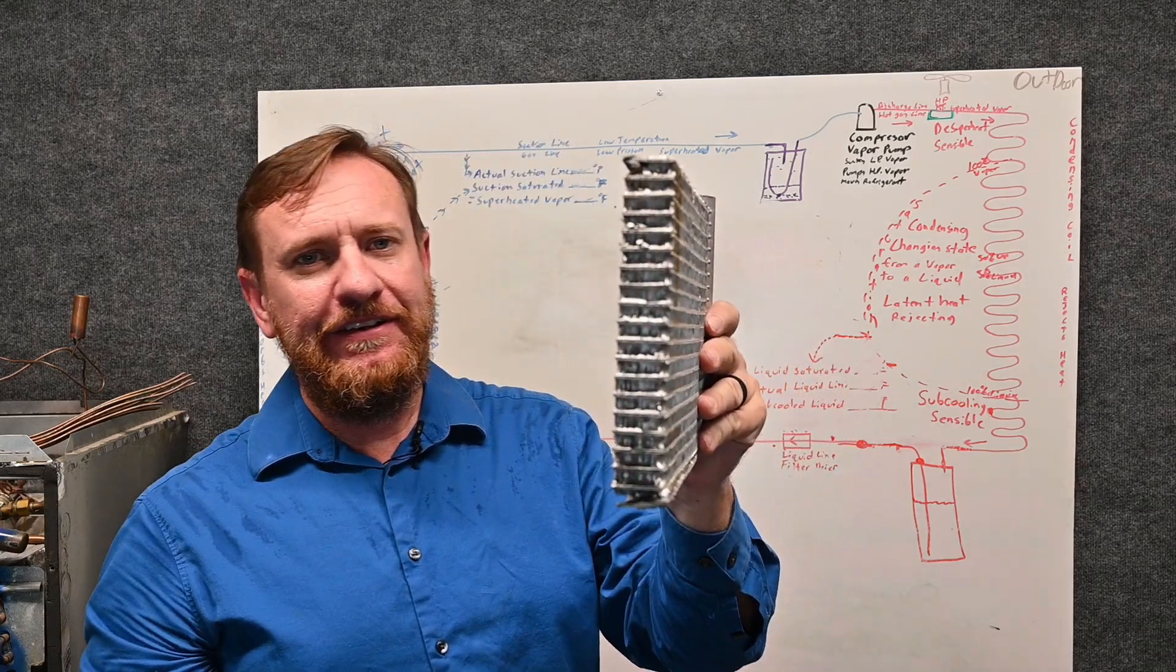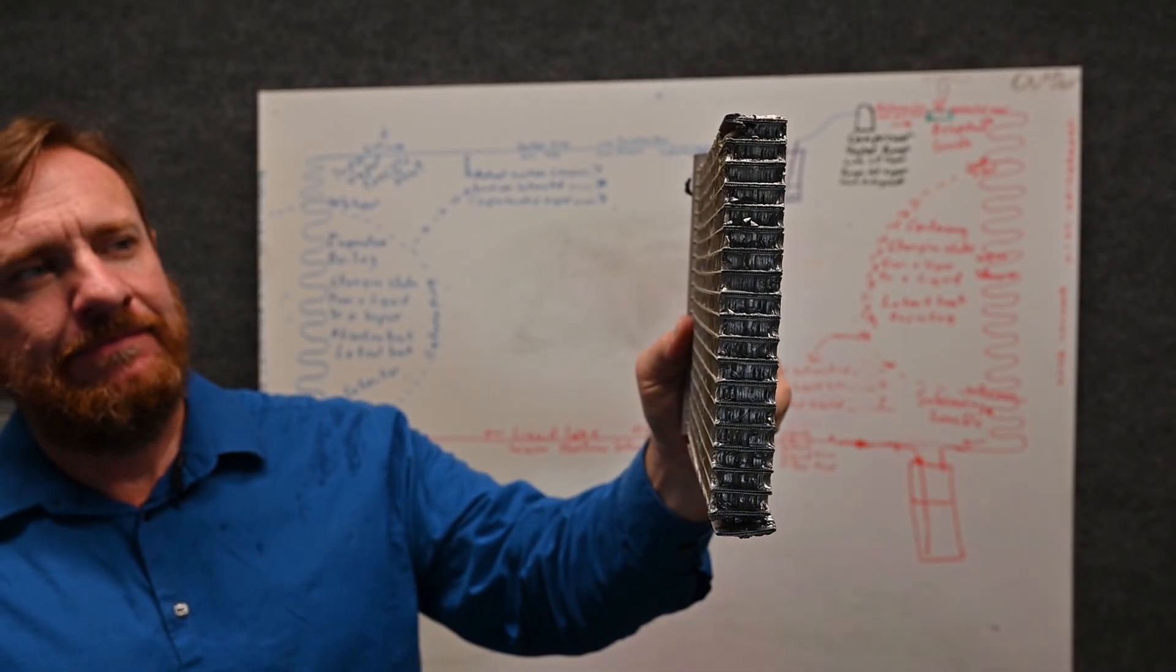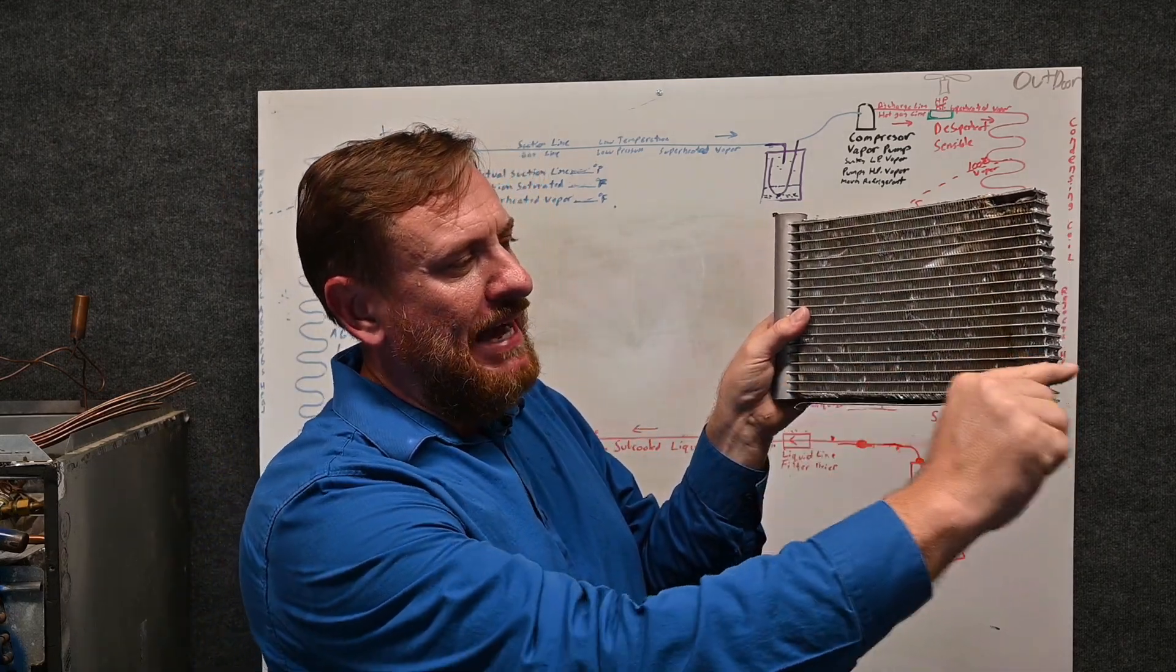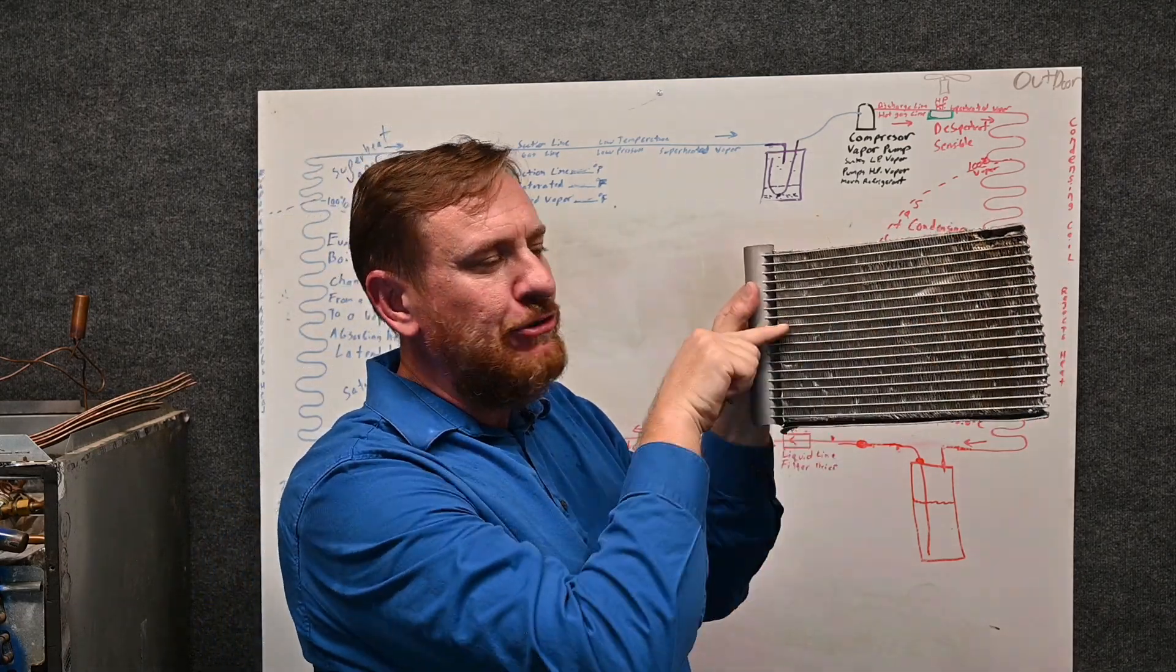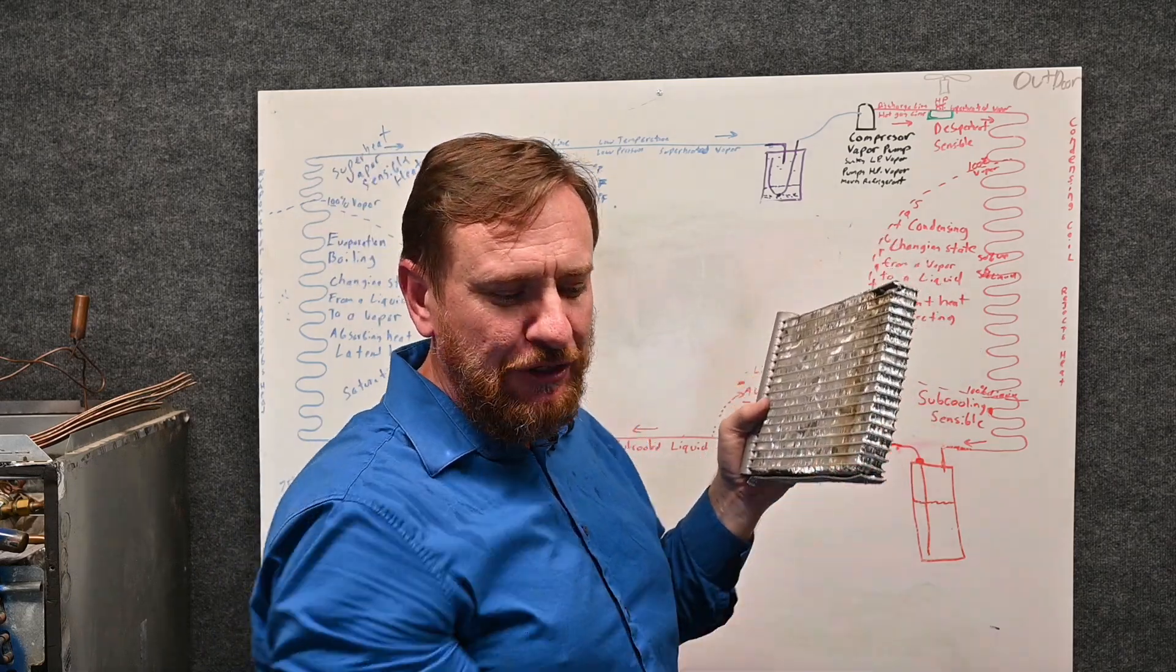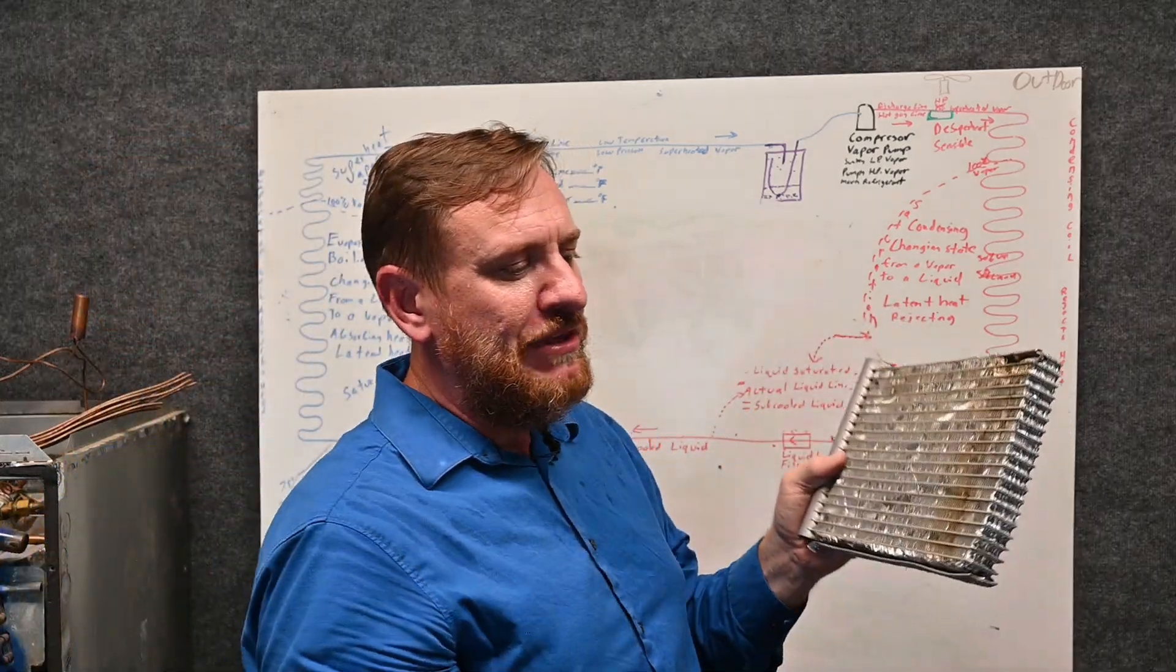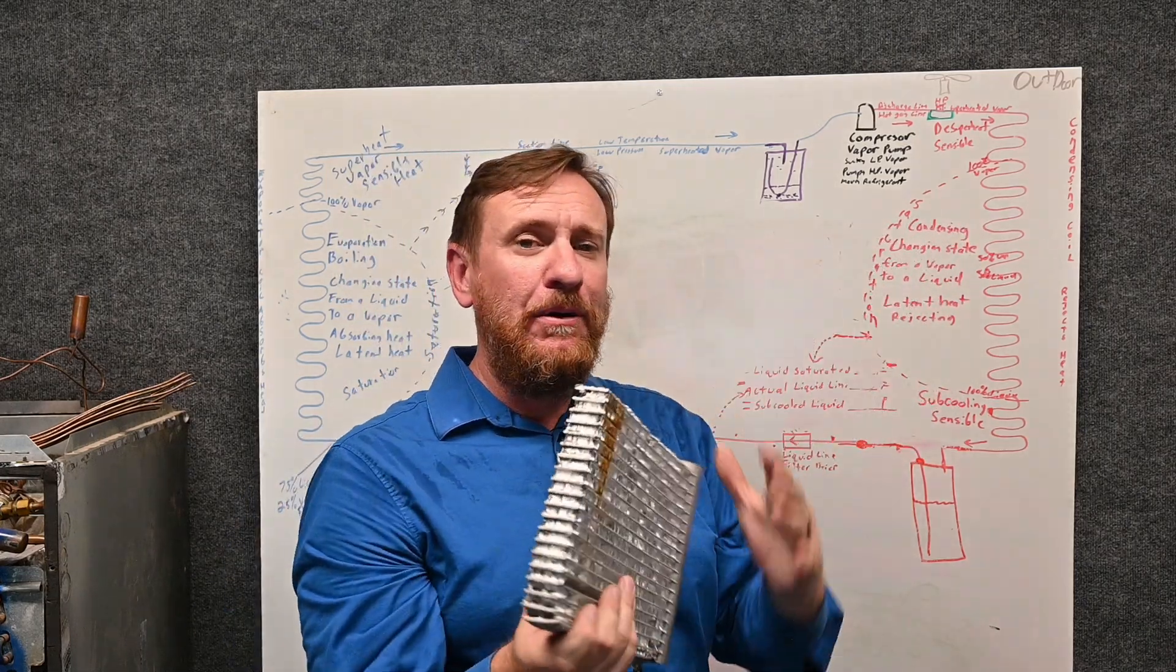If we look in the very end, there's these little channels that run back and forth all the way across the system. So we have one header bar and all of these little bitty flat channels that run out. Notice how flat and how small these channels are. If we look at our tube and fin, we see there's a significant difference in size of the tubing. Well, the idea is that more refrigerant is touching more of the metal in these flat channels.